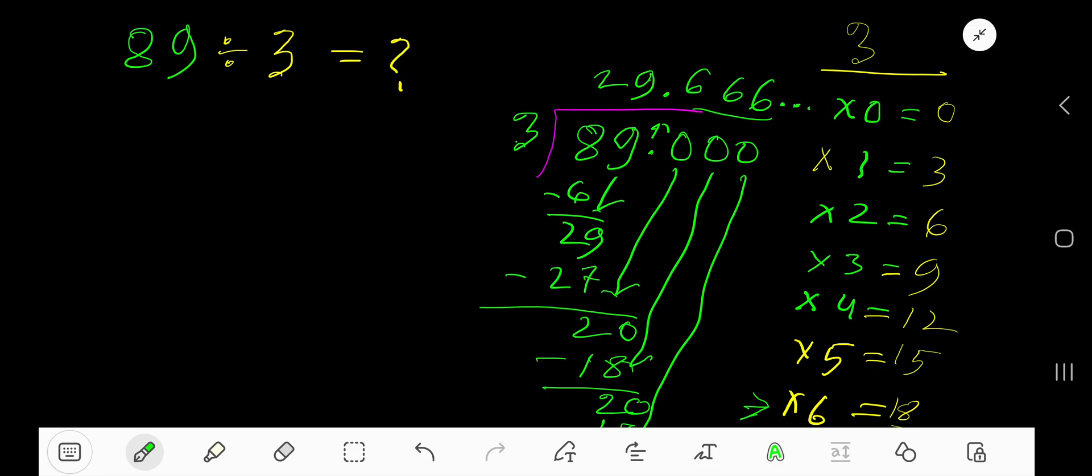So you can place here 3 dots. This is the answer. But you can write your answer placing a bar. This bar means this digit 6 is repeating. 29.6 with a bar.